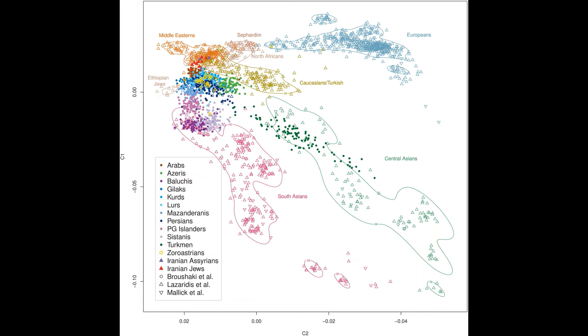The three outlying Iranian groups are the Sistanis, the Baluchis, the Persian Gulf Islanders, as well as the Turkmen. These are the outliers while the remainder formed their own Iran cluster. This is a bit distinct from the Middle Eastern cluster as well as distinct from Sephardim, North Africans, South Asians and Europeans.